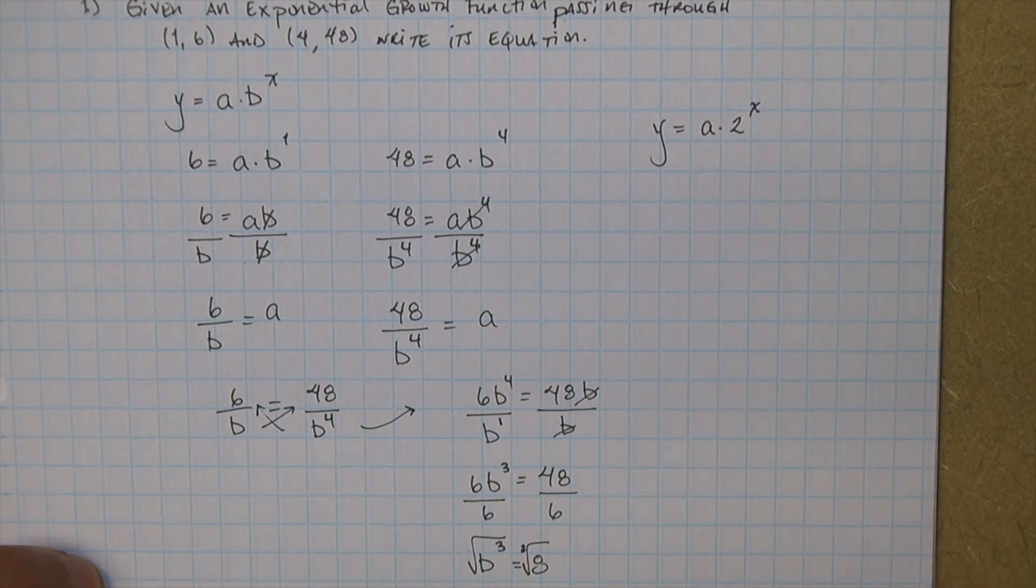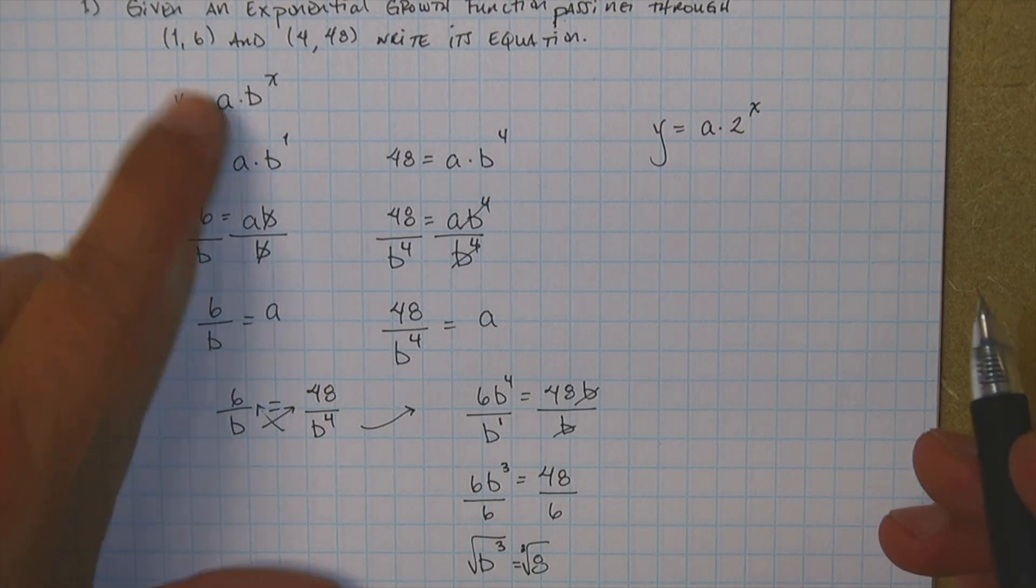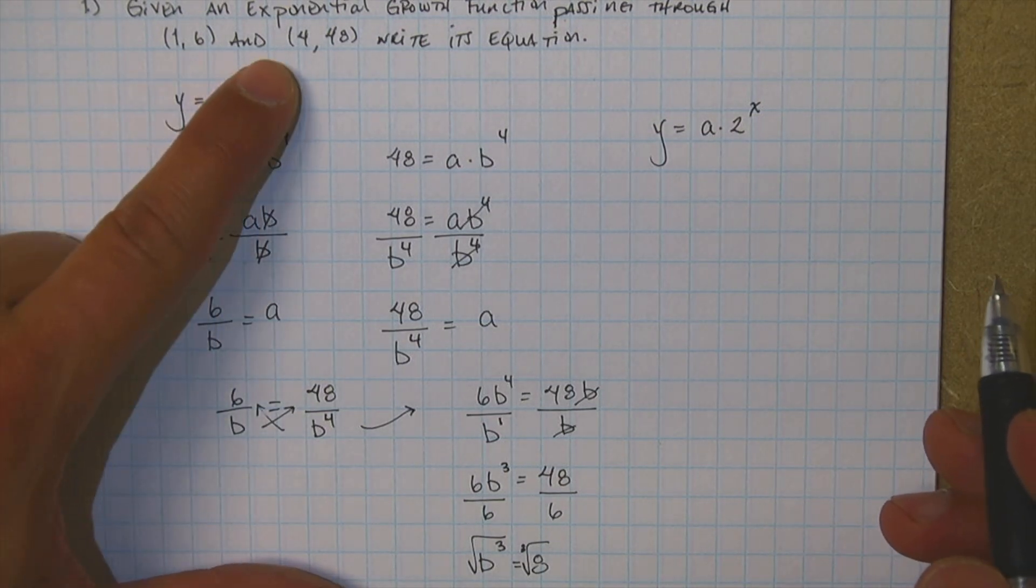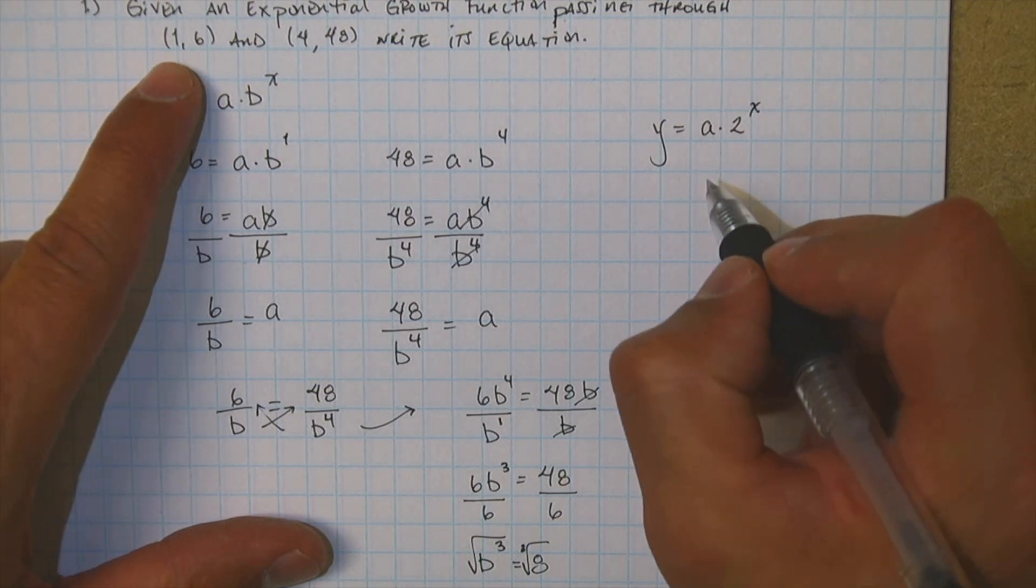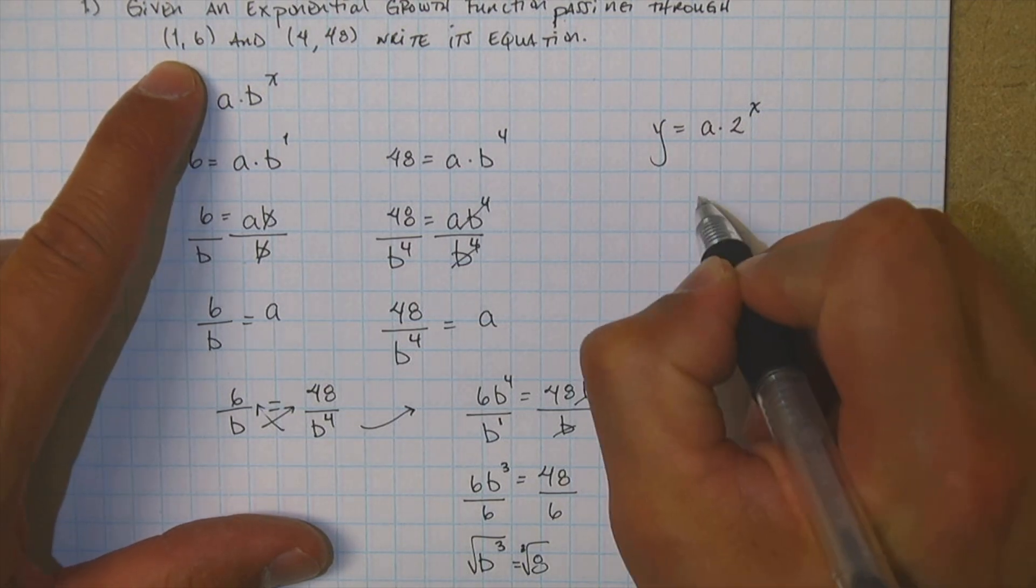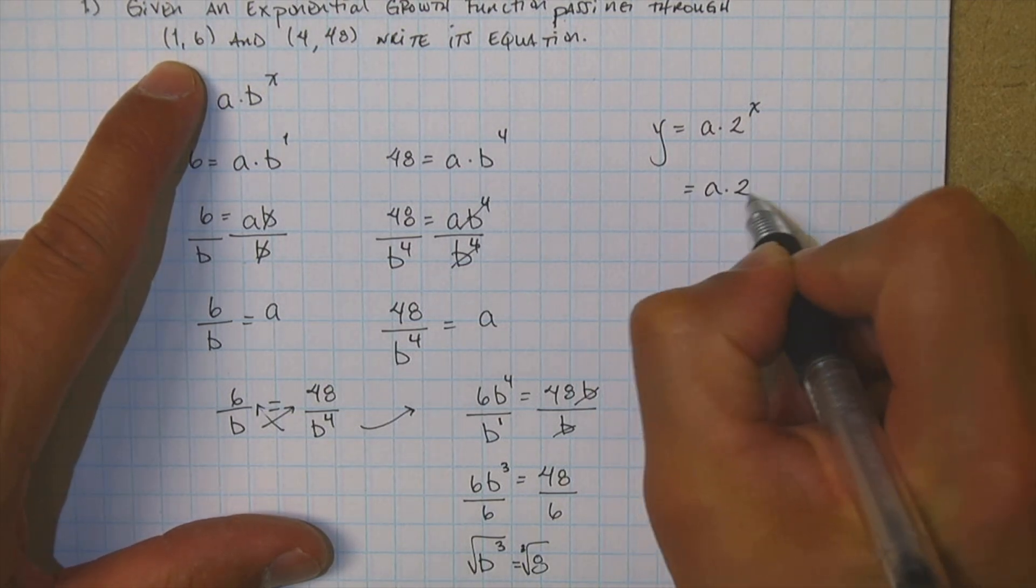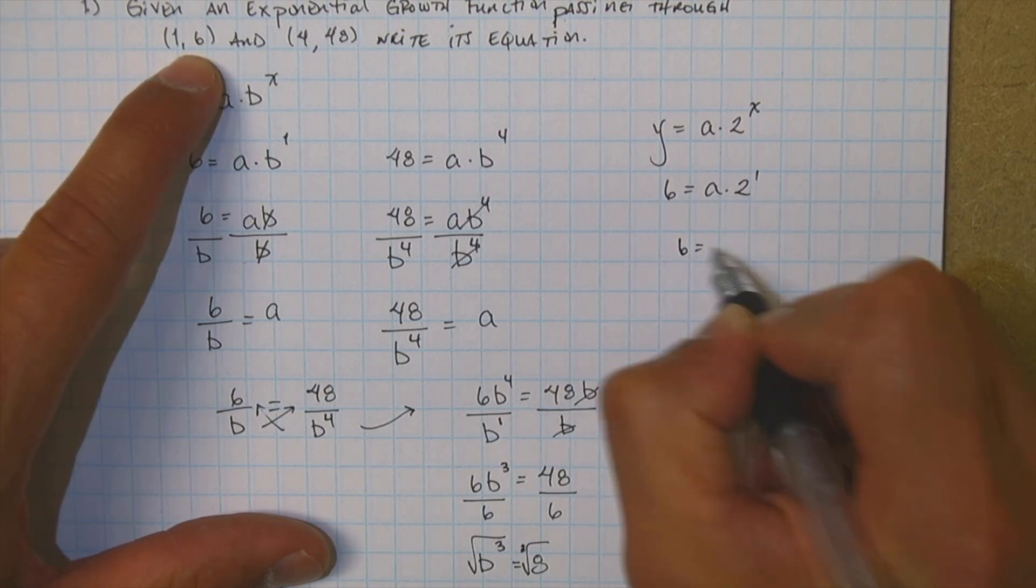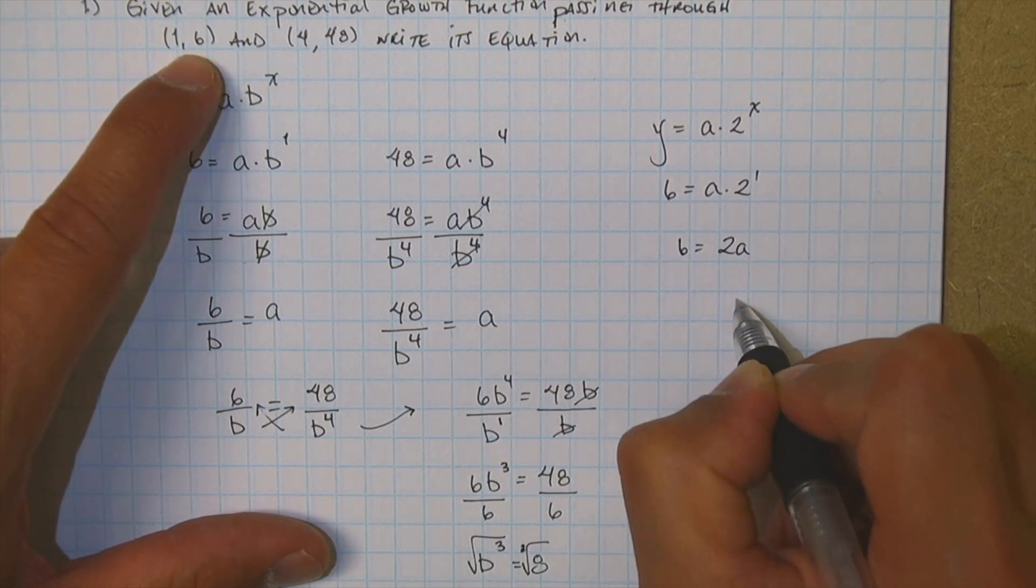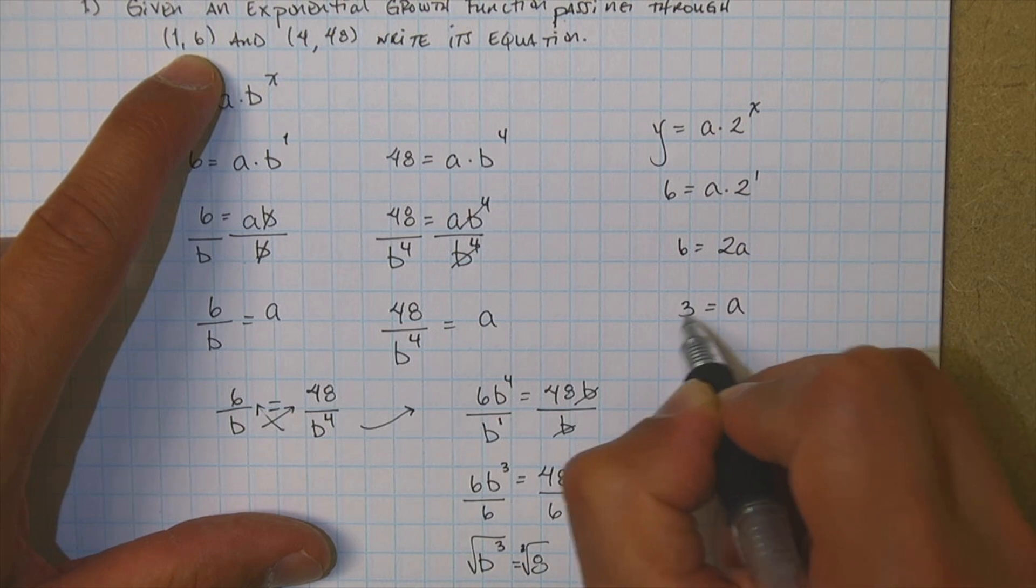Great. So now I just have to find a. Well, how do you do that? Well, now you have a point here: 1, 6 or 4, 48. So take x equals 1. So a times 2 to the 1 is equal to 6. You're left with 6 is equal to 2a. And you already know that a is equal to 3.